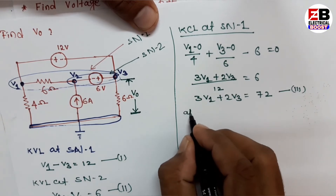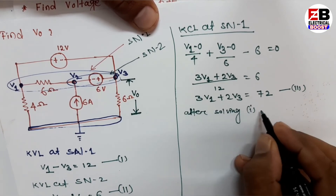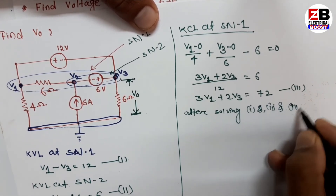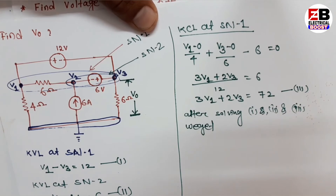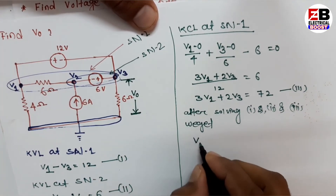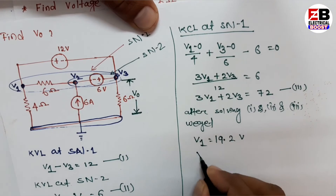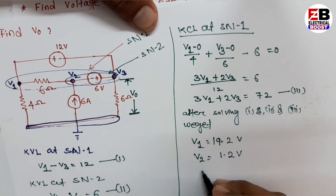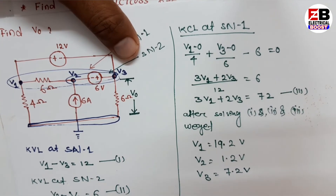After solving equations 1, 2, and 3 using a calculator, we get: V1 equals 19.2 volts, V2 equals 1.2 volts, and V3 equals 7.2 volts. These are our node voltages.